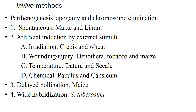Through temperature treatment, haploid induction is possible in Datura and Cichorium. By chemical treatment: Populus and Capsicum. The third method is delayed pollination, that is in maize, and wide hybridization in Solanum tuberosum.